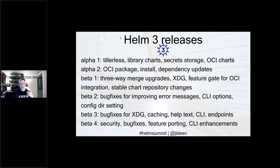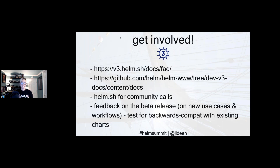Before we hit GA, we're really focusing on making sure all security features are ported over and bug fixes are addressed. That's where you come in — please get involved. You can reach out on the fact page, contribute to the docs — they're open source on helm.sh — click on the dev v3 branch and make pull requests. Check out helm.sh for community calls. Most importantly, we really want feedback on the beta release. If you find something that is not backwards compatible with your existing charts, please reach out — we'd love to hear about new use cases.